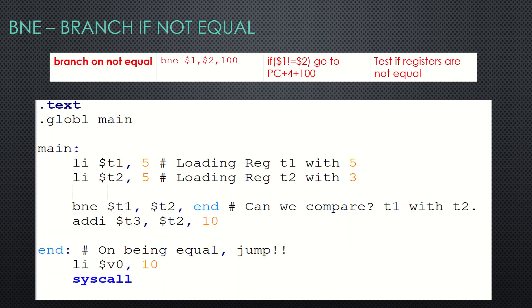Now we move to BNE — branch if not equal. It is the complement of BEQ. The branching happens when the two registers are NOT equal. I load t1 with 5 and t2 with 5. Since they are equal, BNE will NOT branch, so the add-immediate line will be executed. t2 will be updated with 10 more added to it — 10 plus 5 is 15 — and t3 will be updated with 15.